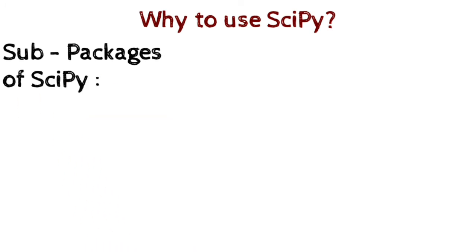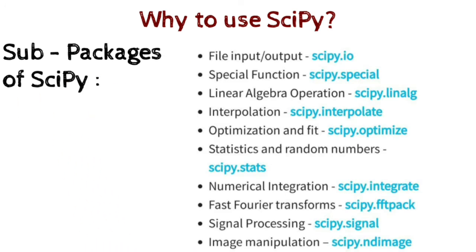Let's see which sub-packages SciPy offers. First, file input/output: scipy.io. Second, special functions: scipy.special. Third, linear algebra operations: scipy.linalg. Fourth, interpolation: scipy.interpolate. Fifth, optimization and fit: scipy.optimize. Sixth, statistics and random numbers: scipy.stats. Seventh, numerical integration: scipy.integrate. Eighth, fast Fourier transforms: scipy.fftpack. Ninth, signal processing: scipy.signal. Tenth, image manipulation: scipy.ndimage.